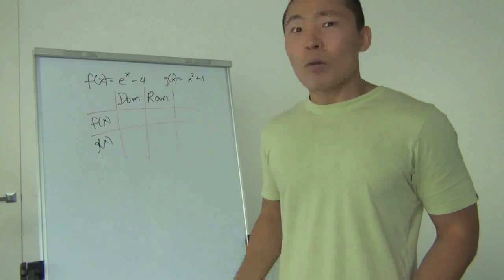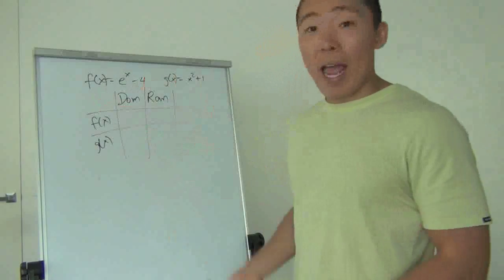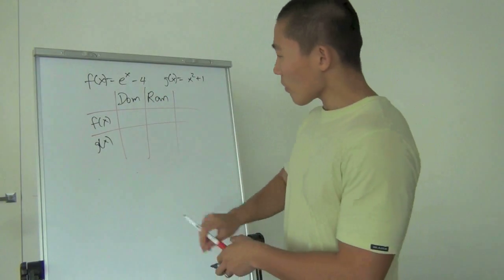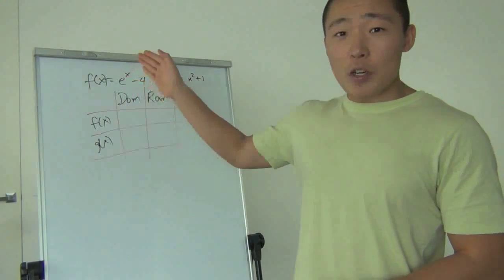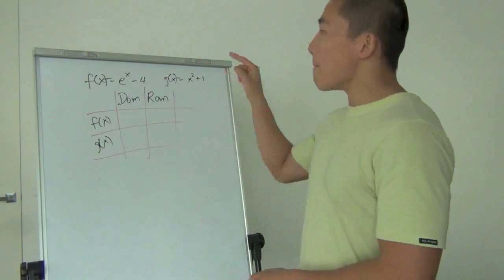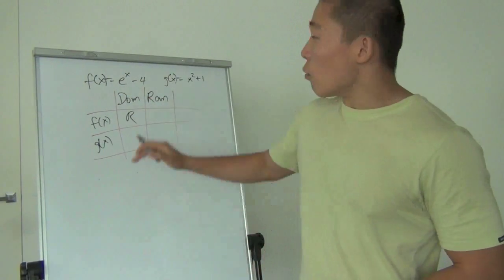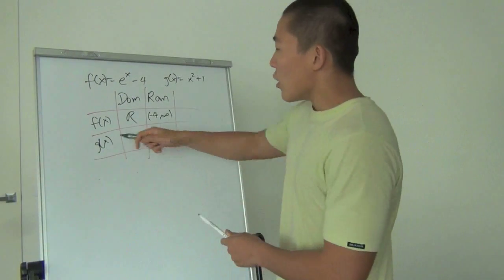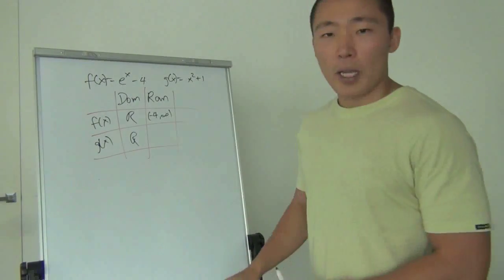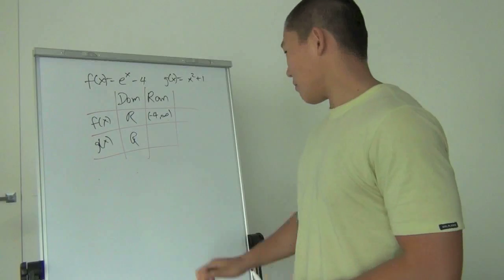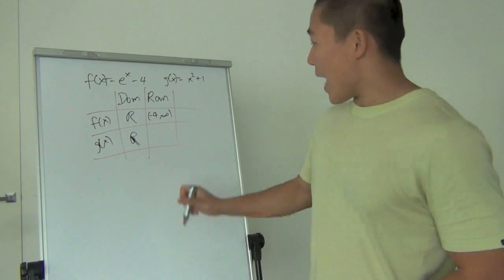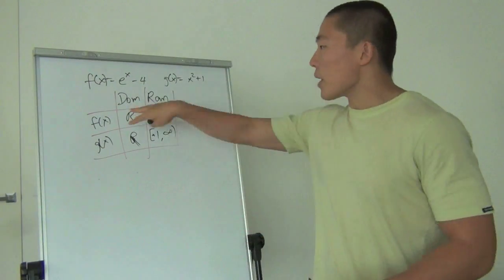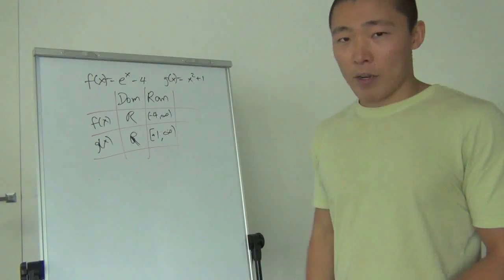Fill in the four boxes: domain of f(x) is ℝ; range of f(x) is (−4, ∞) — it never touches −4. For g(x), it's a parabola: domain is ℝ; range is [1, ∞) — it does touch 1. Get those four boxes filled — that's your first step. Don't skip steps and don't rely on memory.